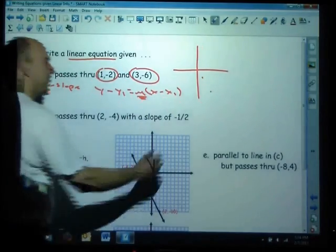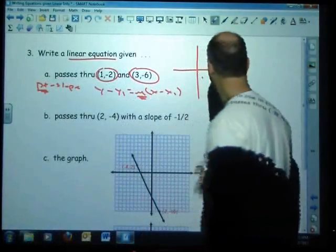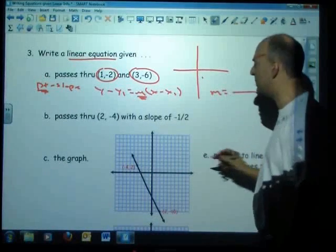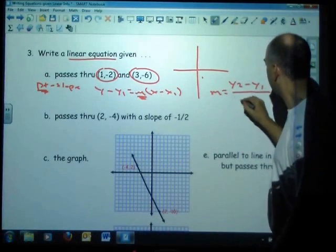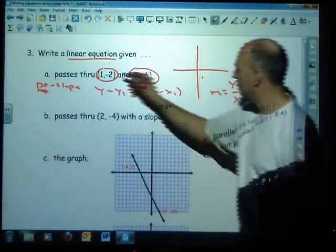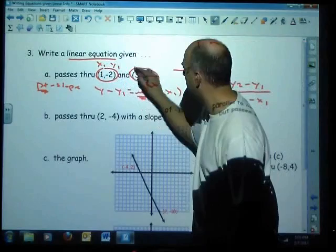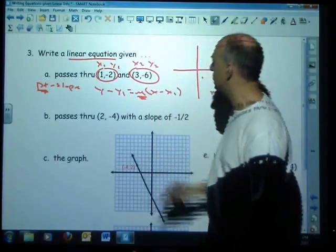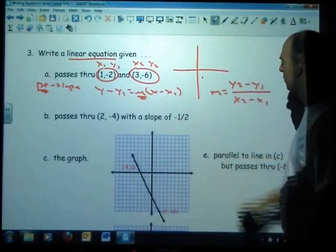So the slope, if you've seen my other videos you've already seen this a couple times, is the difference of the y-coordinates divided by the difference of the x-coordinates. So essentially, your first point you could call it x1 y1, your second one x2 y2. And you put the biscuits in the baskets and you find the slope.